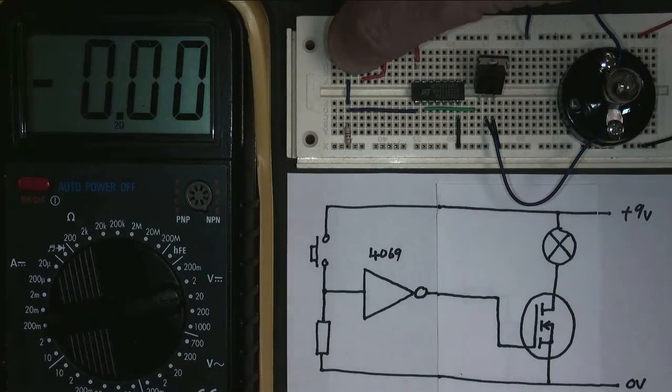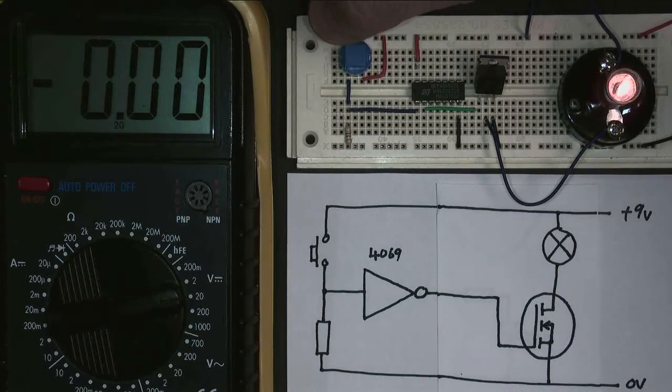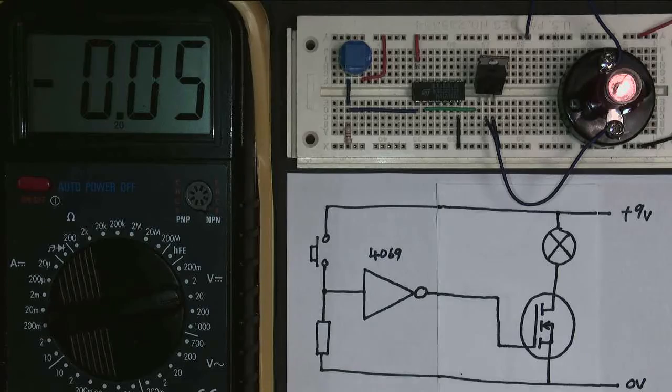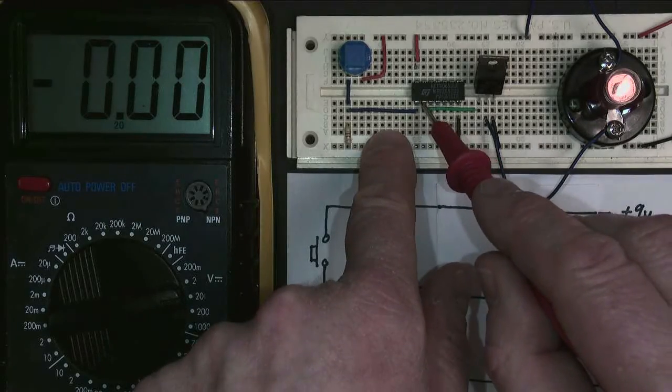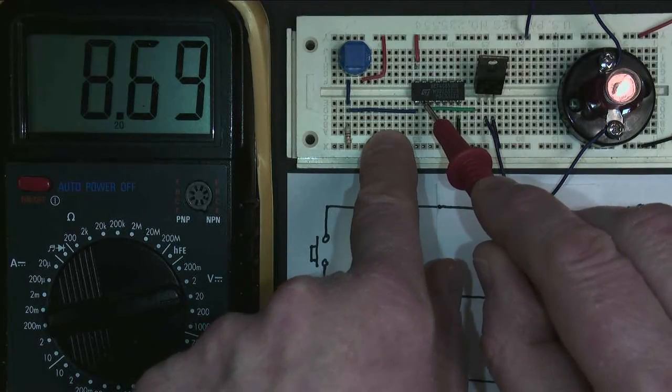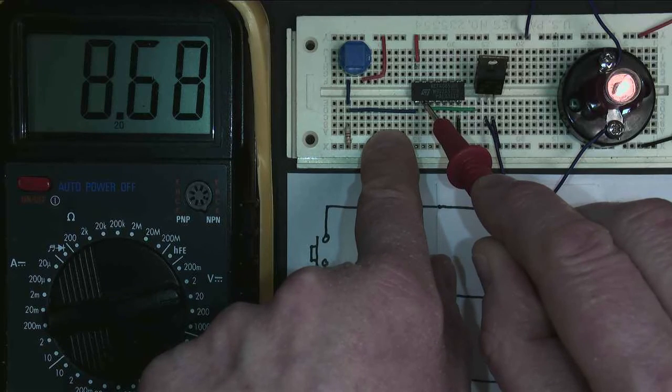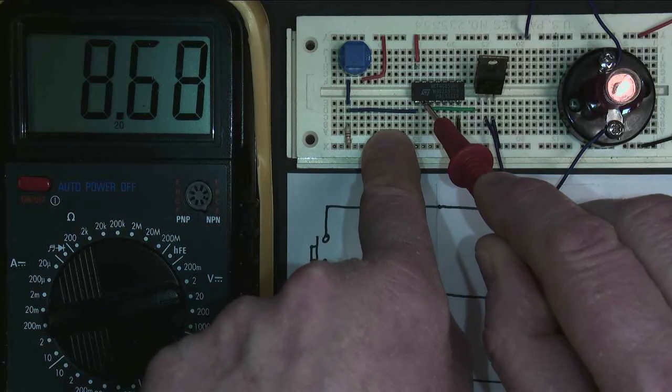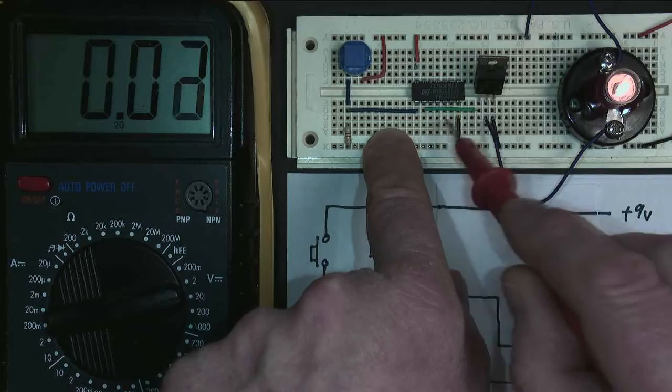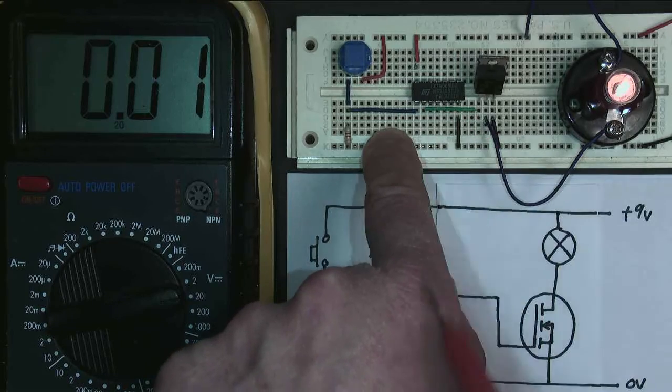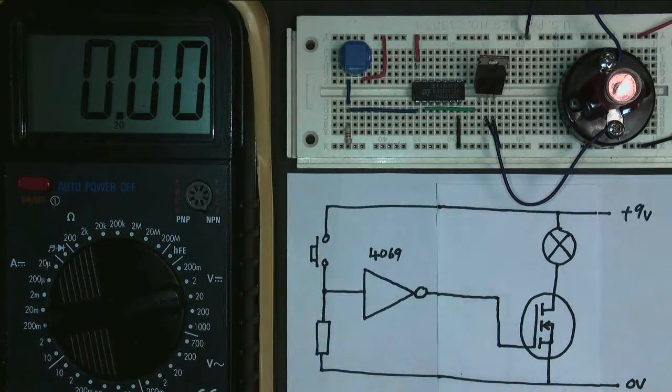Let's see if it works. Press the button. Bulb goes off. Let the button go. Bulb comes on. Looking at the voltage on the output, it's much closer to 9 volts than it was before. This is a very good logic 1, because the MOSFET takes no current from the NOT gate, and therefore the NOT gate has no voltage drop across its internal resistance.